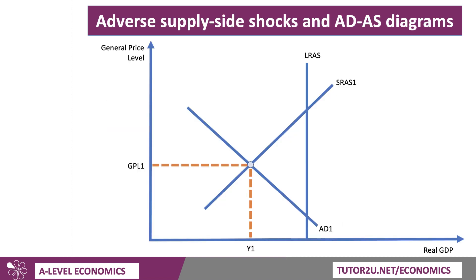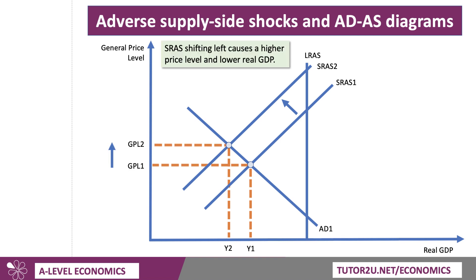So how do we model a supply-side shock? If you get this as an exam question, how would you model it? Another good example would be the semiconductor shortage that plagued the technology sectors and automotive industries during the pandemic. If there's a significant fall in supply and increase in the price of semiconductors, other things being the same — ceteris paribus — the aggregate supply curve shifts to the left from SRAS1 to SRAS2. That has negative effects on real GDP and also causes an increase in the general price level. So there's your basic model of a supply-side shock.